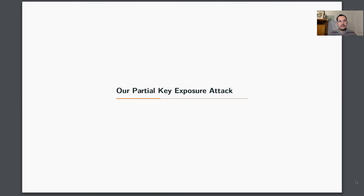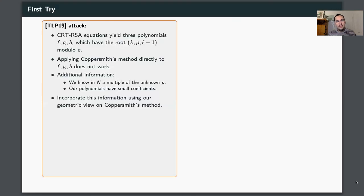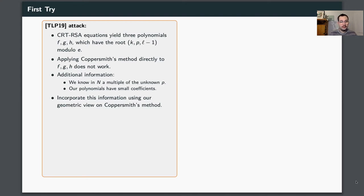Now that we've discussed our new proof for the TLP19 attack, let's move to our partial key exposure attack. To summarize: in TLP19 we started with CRT-RSA equations, obtained three polynomials with root (k, p, l minus 1) modulo e, but applying Coppersmith's method directly didn't give a successful attack. Using the additional information — that we know a multiple of one unknown and that polynomials have small coefficients — and incorporating it via our geometric view, we eventually obtained the TLP19 result.